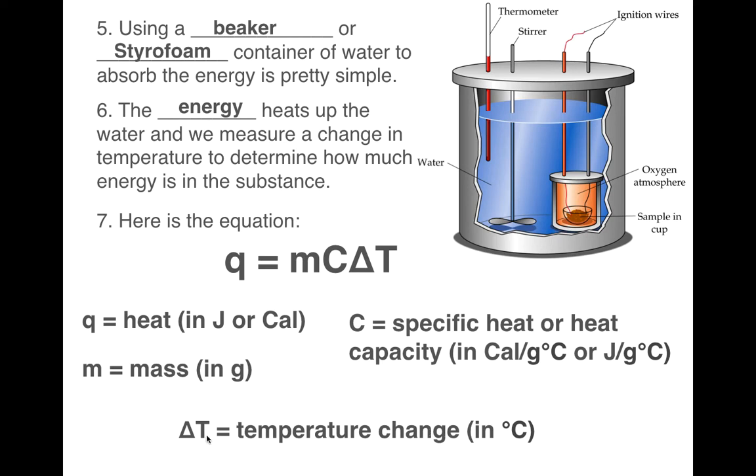And then delta T is the temperature change. Now notice it says temperature change, not just temperature, but temperature change. And also it is measured in degrees Celsius, not in Fahrenheit or anything else. So why is this important that it says temperature change? That means that there are two numbers. You have a starting value and you have a final value. The change in temperature is the final value minus the starting value because that's the way change works.